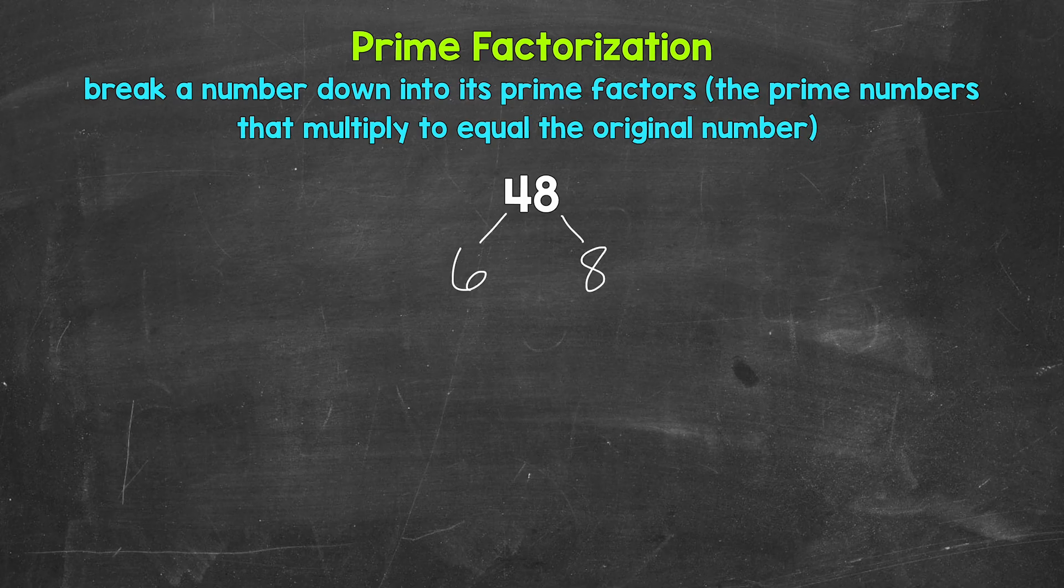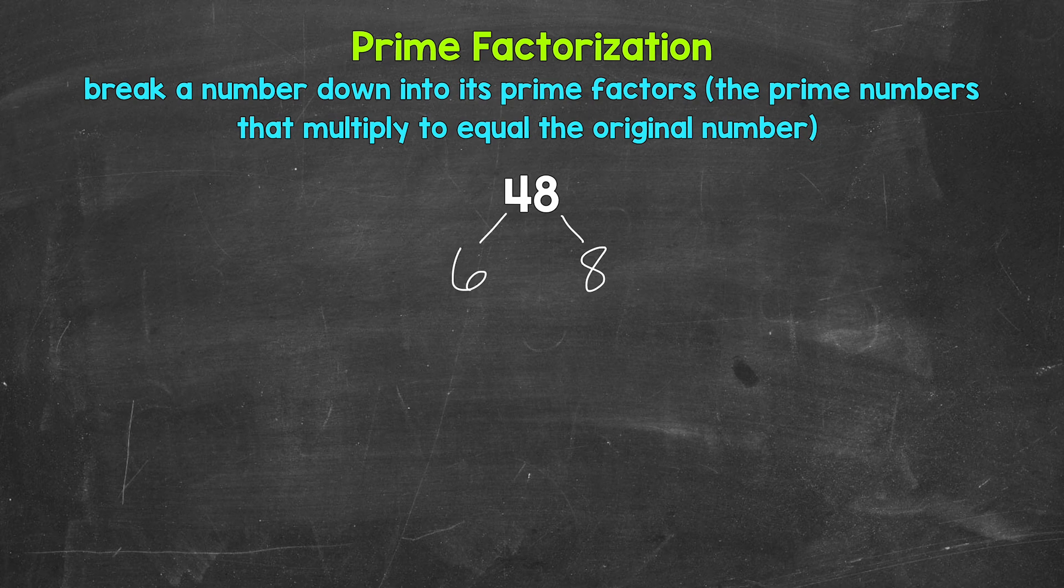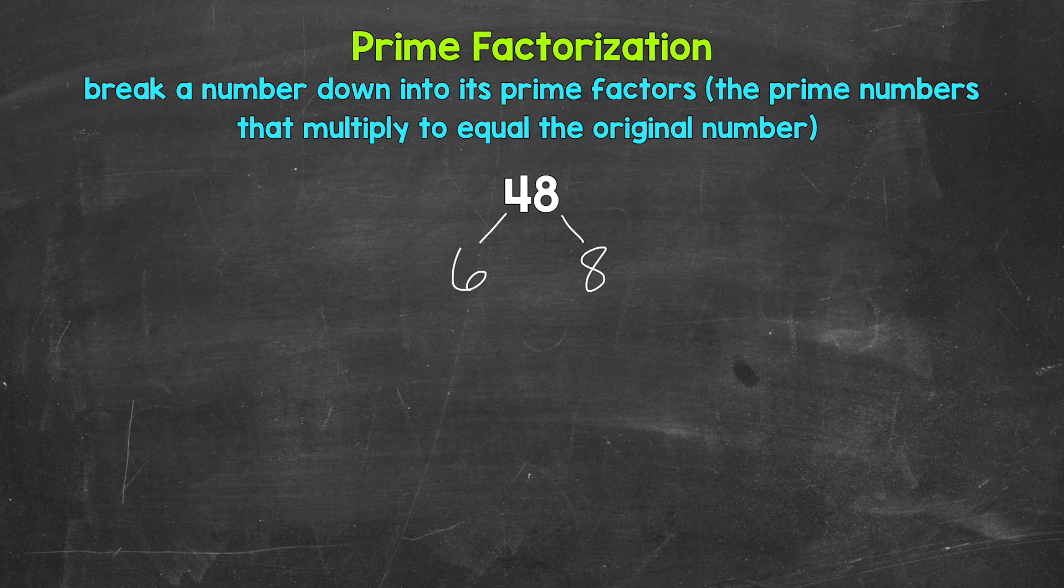Now, there are other factors that we could have started with here. For example, we could have started with 2 and 24 as well, along with other options. These will all work out. Depending on the number, there can be multiple different factors that we can use. So there can be multiple ways to do these. But in the end, we will get the same prime numbers. And that's what's important. So keep that in mind.